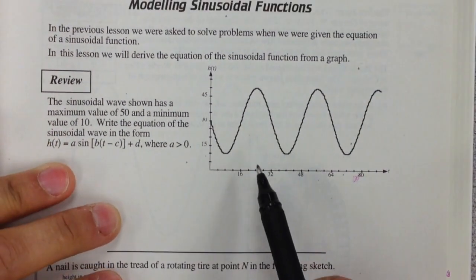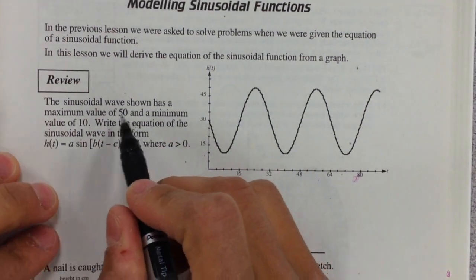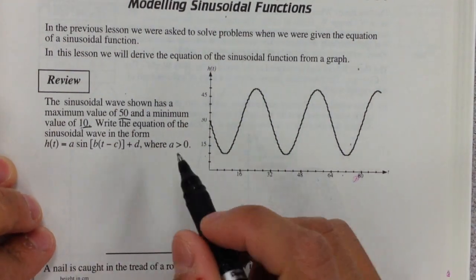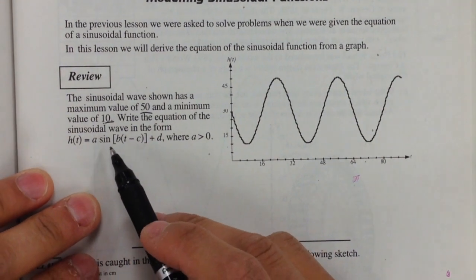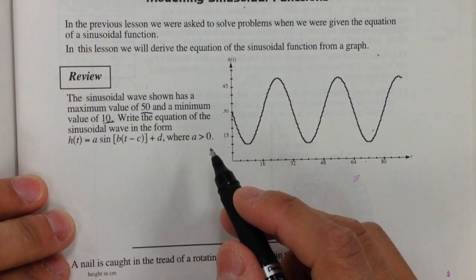In this graph here we have a sinusoidal wave that's shown and it has a maximum value of 50 and a minimum value of 10. We're going to write the equation of the wave in the form h(t) = a sin b(t - c) + d, where a has to be greater than 0.